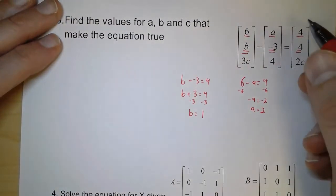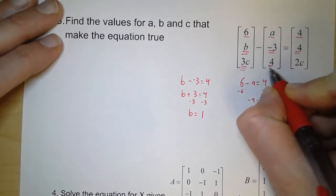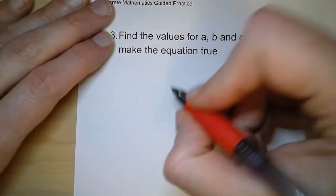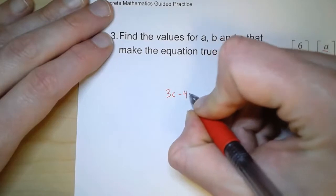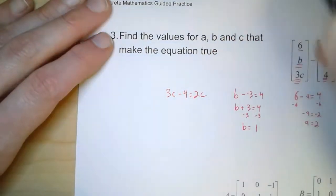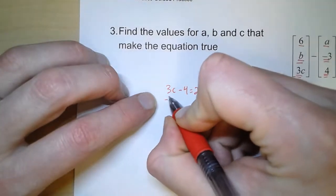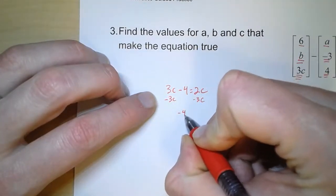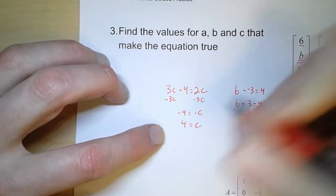And then finally, on the bottom, we have 3c minus 4 equals 2c. So over here, I'll write 3c minus 4 equals 2c. And so when we have variables on both sides, I'll subtract so that I get the variables on one side. So negative 4 equals negative c, so that means 4 equals c.